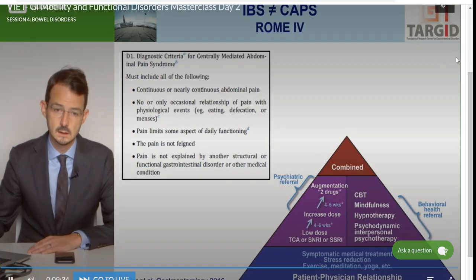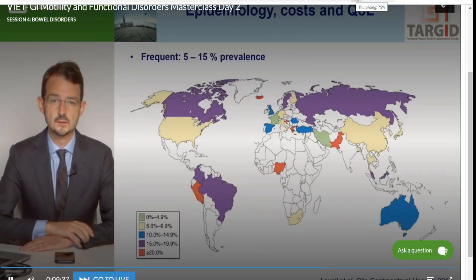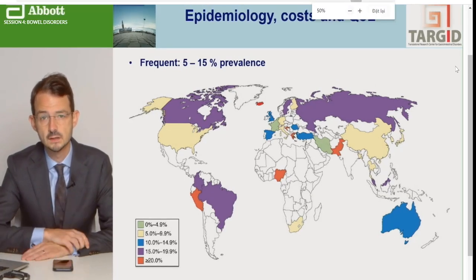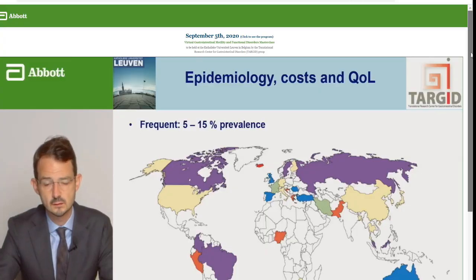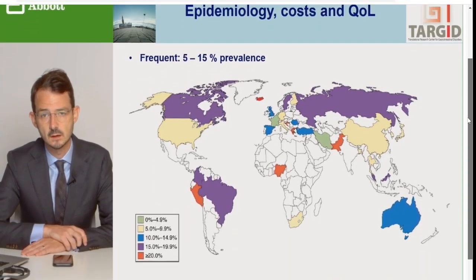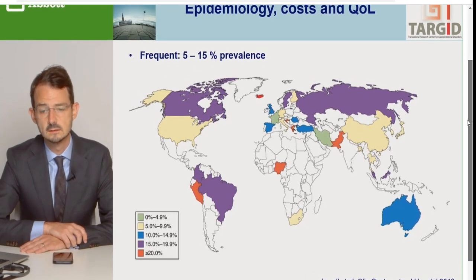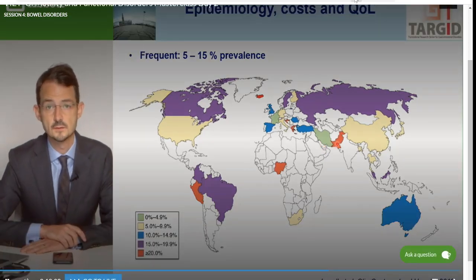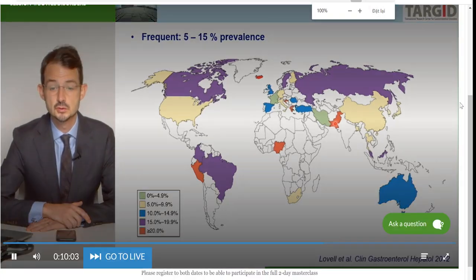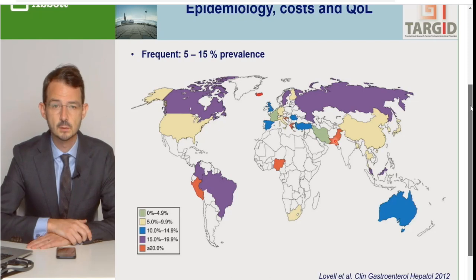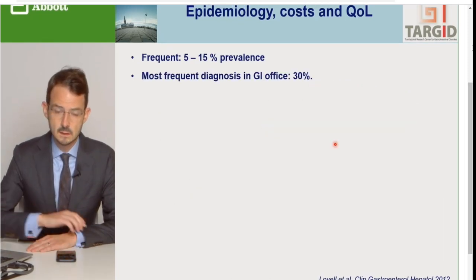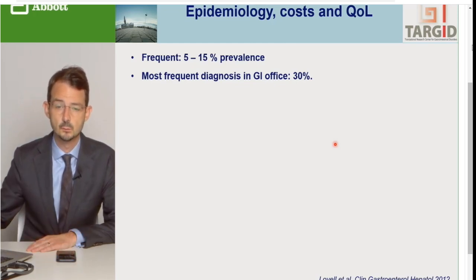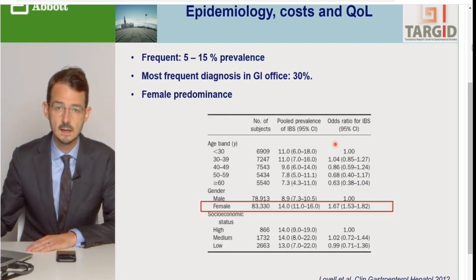Tiêu chí của Rome không những chỉ sử dụng trong nghiên cứu mà còn sử dụng trong lâm sàng. Như giáo sư đã đề cập, đây là một trong các bệnh lý phổ biến nhất trong thực hành lâm sàng với đường tiêu hoá. Qua các khảo sát trên dân số, người ta ghi nhận tần suất của nó từ 5-15% trên thế giới với sự biến thiên rất nhiều. Trên các bản đồ thế giới, tần suất ở Iran chỉ khoảng 1% và ngay kế bên là Pakistan thì lại tới 45%. Cứ 3 bệnh nhân thì có 1 bệnh nhân được chẩn đoán là IBS.